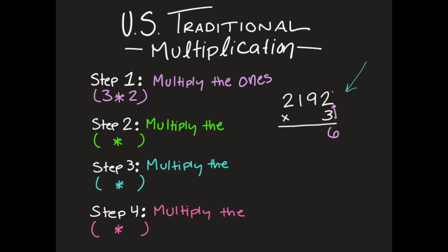Alright, moving on. I'm now going to multiply the tens. So I'm going to take that three and I'm going to multiply it by the nine that's in the tens column. So really when I multiply that, I'm really multiplying by 90. So three times nine is 27.